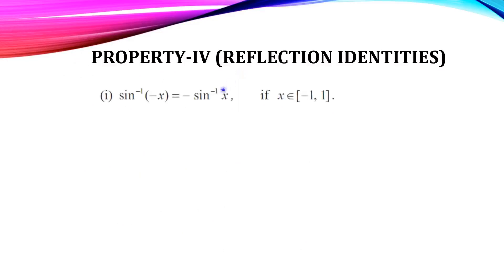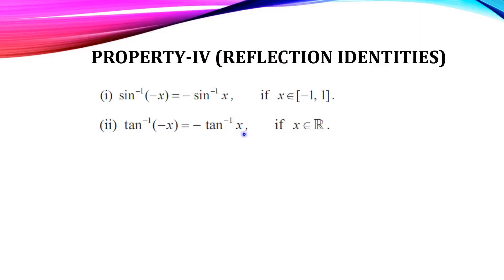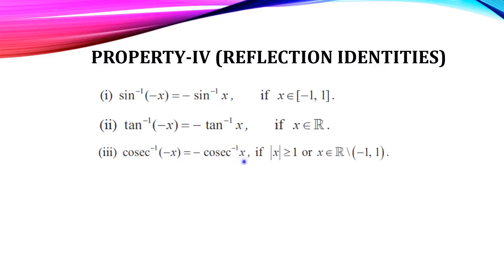Now see Property 4: Reflection Identities. First, sin inverse of (−x) = −sin inverse of x, if x belongs to [−1, 1]. Second, tan inverse of (−x) = −tan inverse of x, if x belongs to all real numbers. Third, cosecant inverse of (−x) = −cosecant inverse of x, if |x| ≥ 1 (or x belongs to real numbers except (−1, 1)).